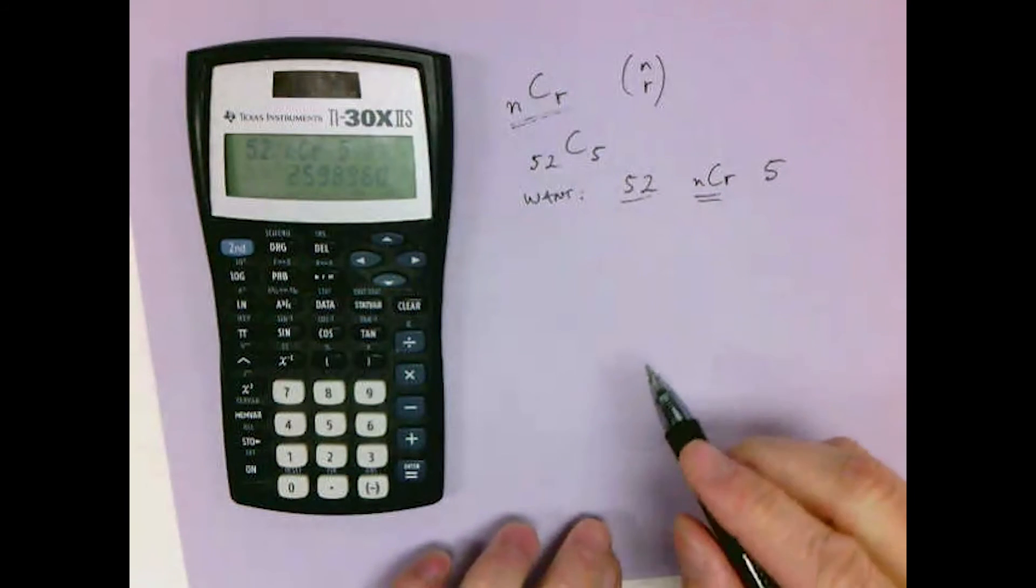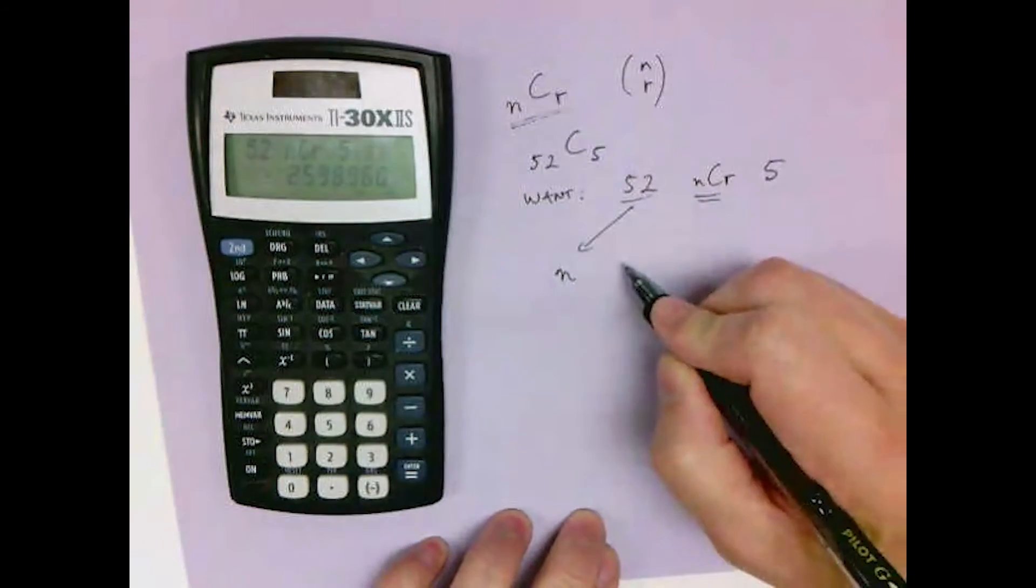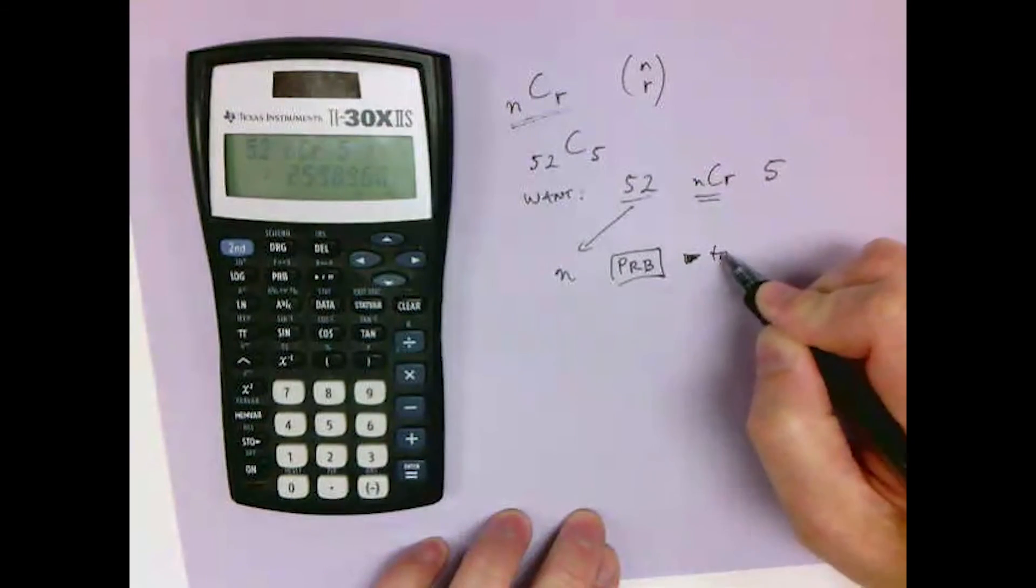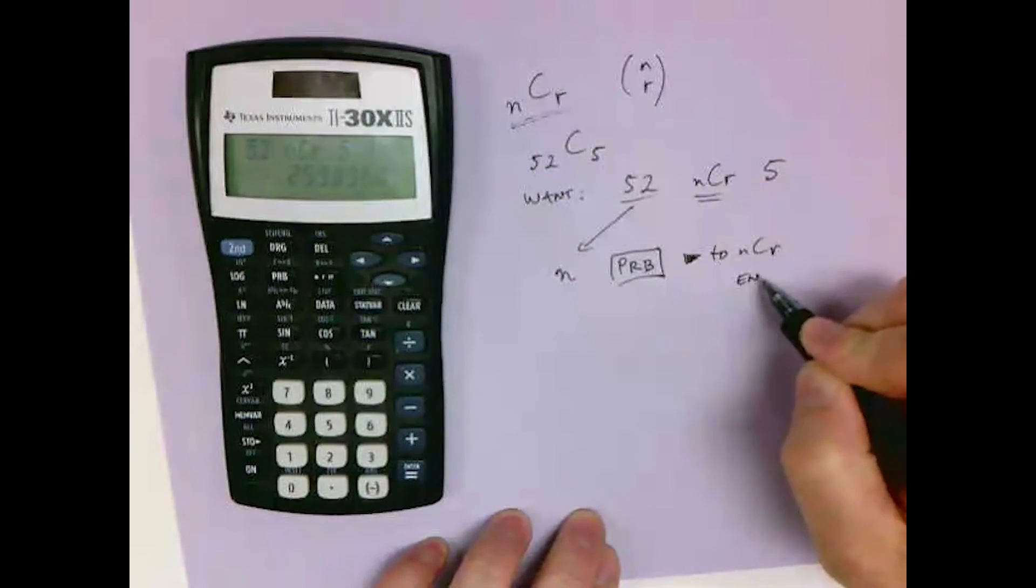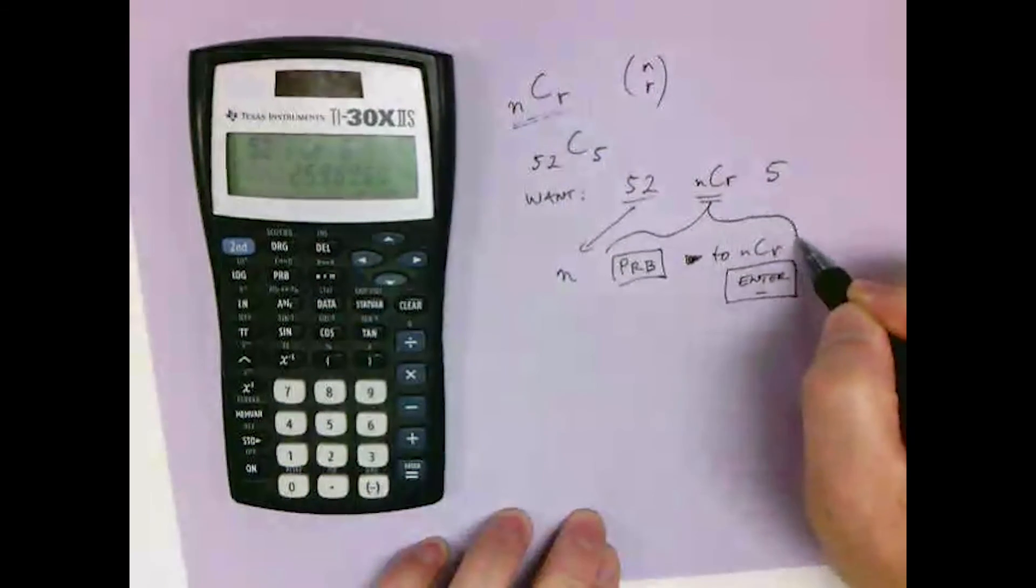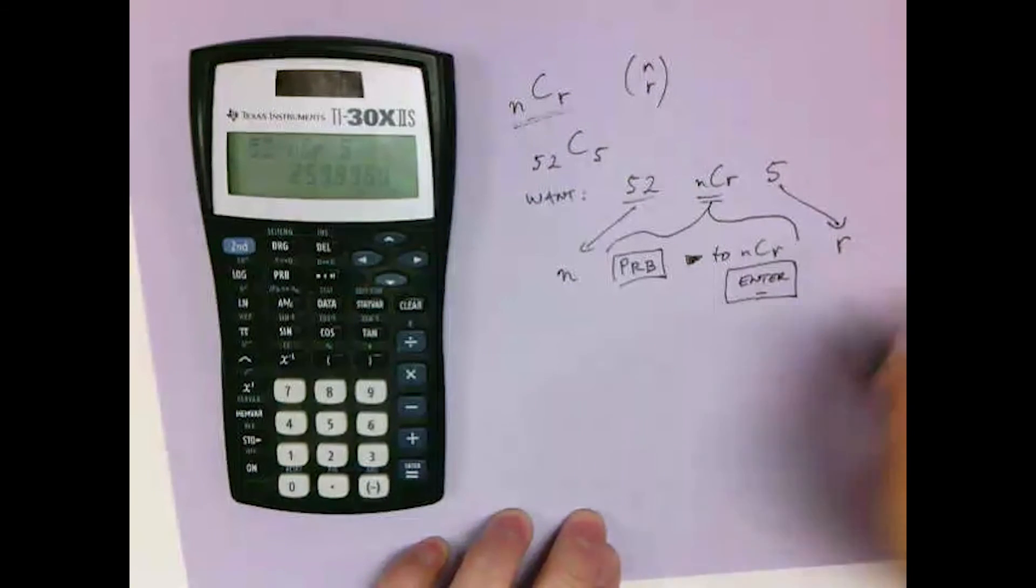So the procedure is to type in N, hit PRB, arrow to NCR, enter. All of this is to get the NCR on the screen. Then type the number R.